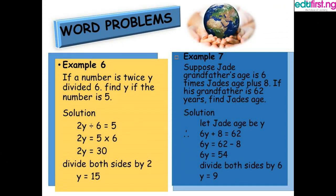Example 6: If a number is twice y divided by 6, find y if the number is 5. We write the expression: 2y divided by 6 equals 5. Collecting like terms: 2y equals 5 multiplied by 6, which is 30. Dividing both sides by 2, y equals 15.